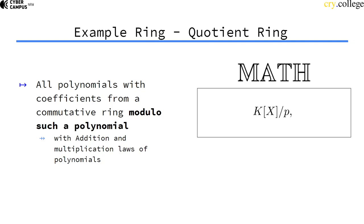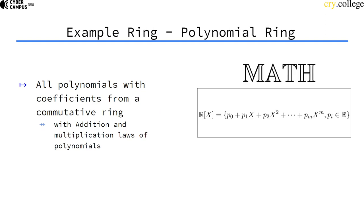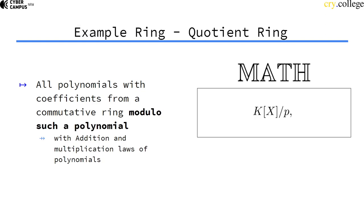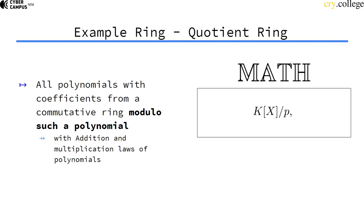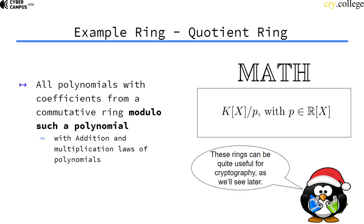There's another quite important construct called quotient ring. It's almost the same as a polynomial ring, but we take all polynomials in this ring modulo a polynomial from within the ring. Then we work again with addition and multiplication laws of polynomials. This is somewhat similar to calculating modulo a certain number when we look at residual classes. These rings can be quite useful for cryptography, but they're somewhat complex, and we'll look at them in more detail later.